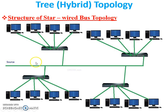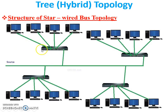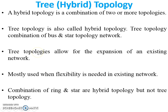It is the combination of two topologies. Hybrid topology is a combination of two or more topologies. You can see over here — this is the star and this is the bus. All star segments are connected with a main bus, so it is hybrid topology. Tree topology is also called hybrid topology — it is a combination of bus and star topology networks.